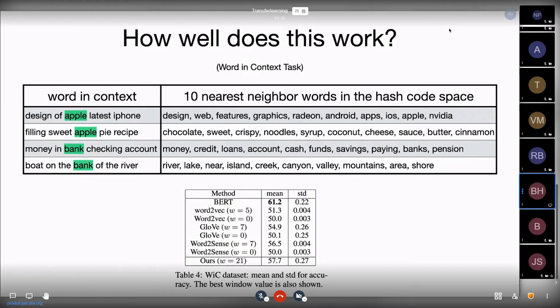And the question is, what are the nearest neighbor words in the hash code space for the word apple, given the context? Well, our model finds words like design, web features, and graphics when you provided a context of design of latest iPhone. This makes sense. That's how we kind of think of the company Apple. But when we start using words like sweet, filling, pie, and recipe, the words most similar to apple are going to be some kind of delicacy, like chocolate or sweet or crispy noodles. And this works, too, for a word like bank. So in English, you have bank, which is where you put your money so that people don't take it away and maybe it can grow with a small amount of interest. And you have bank, which is the side of a stream or a body of water that flows. And when you use bank in the context of money and checking account, your most similar words are money and credit and loans and accounts. And our model is able to find this, again, in a very sparse and binary space. And then you have boat and river, which obviously starts to link to nature concepts like islands and creeks and canyons.